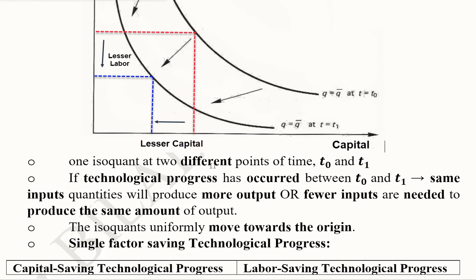So the technological progress has made the same level of output possible with lesser of the inputs. One isoquant at two different points in time, this is what it is, t₀ and t₁, the same isoquant we are talking about.